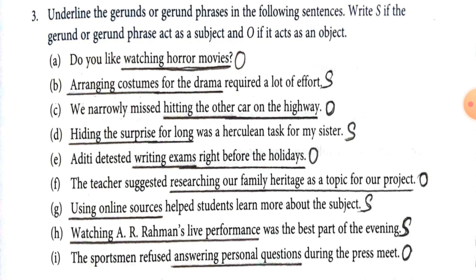Now, children, there is Exercise 3: Underline the gerund or gerund phrase in the following sentences, and write S if the gerund or gerund phrase acts as a subject, and O if it acts as an object. First sentence: Do you like watching horror movies? — here, watching horror movies plays the role of object of the verb like, so write O.